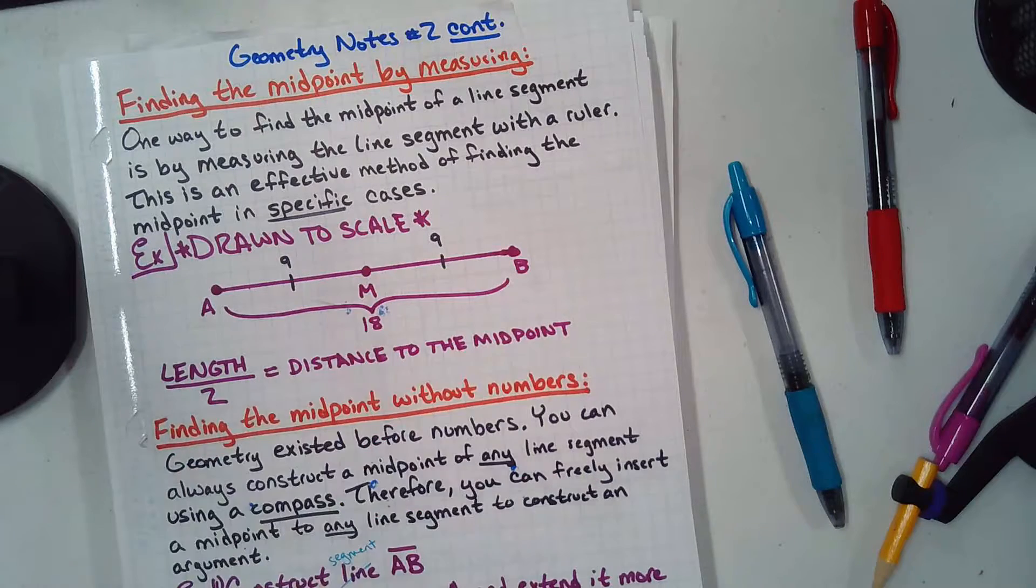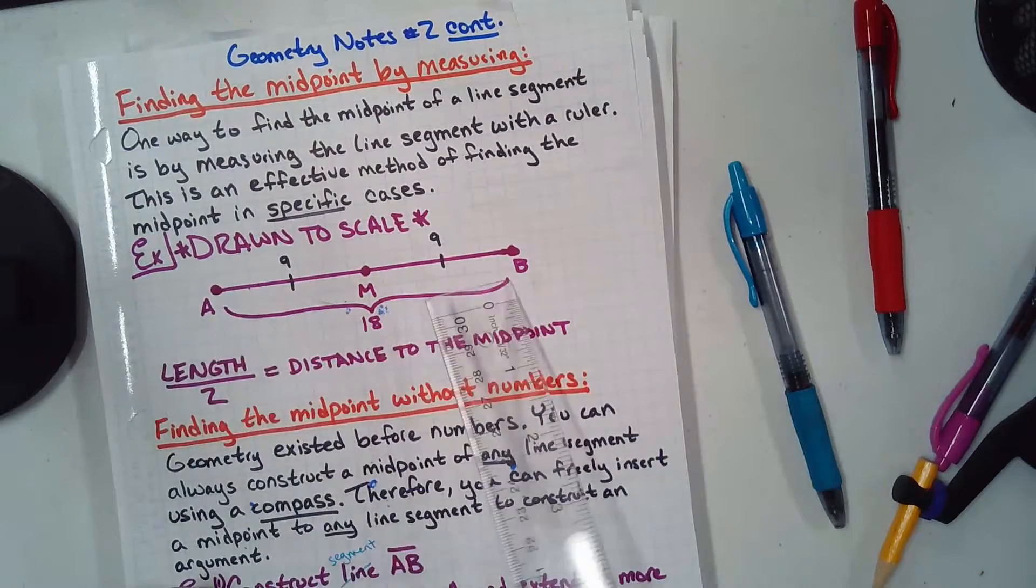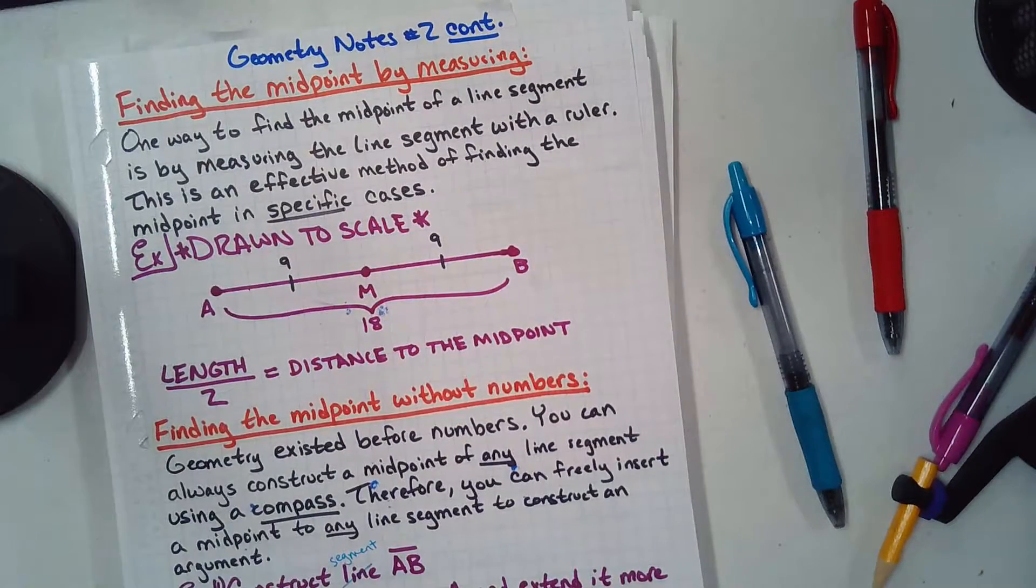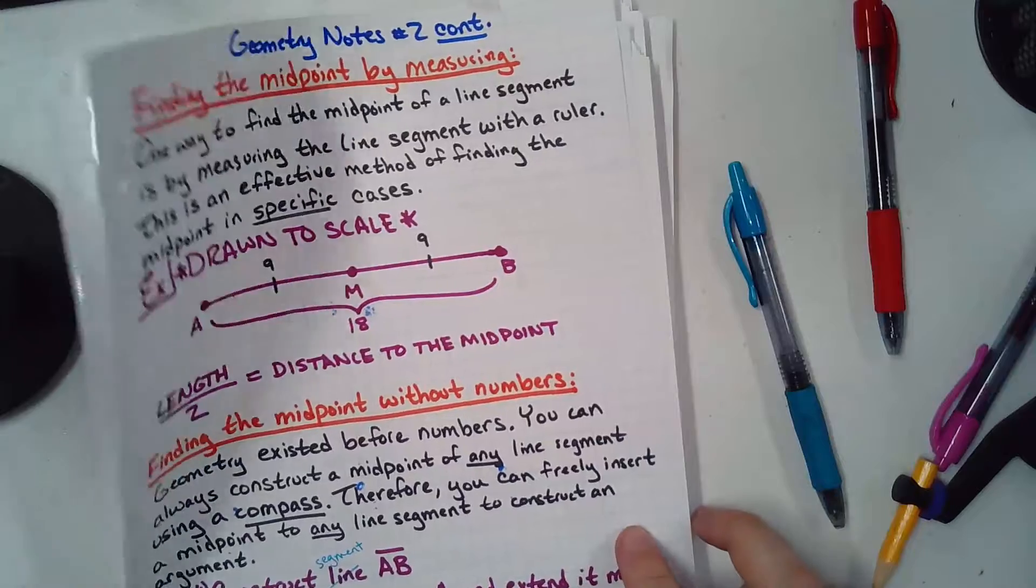We speak general here. Go to the general and save some time in geometry. And so, we don't want specific. Specific's boring. Specific's algebra. So, we're going to do this very little. Measure it out. Count the squares. 18 divided by two. We get nine. Boring. What we're going to do is measure the midpoint without numbers.